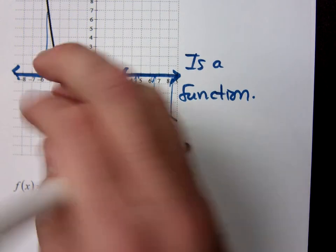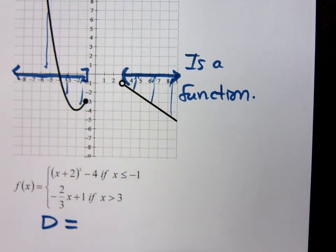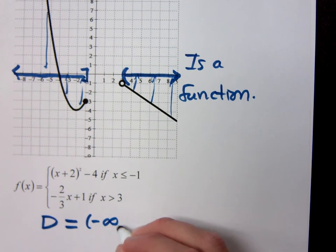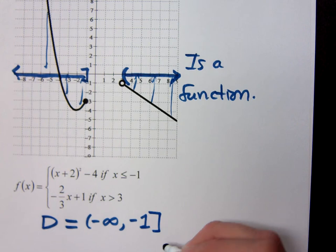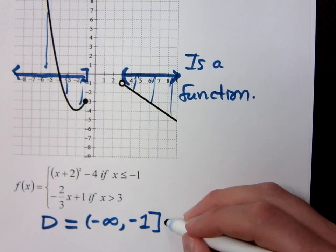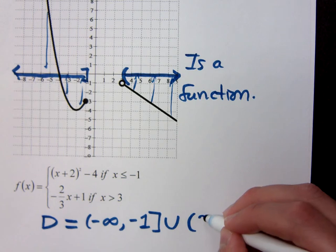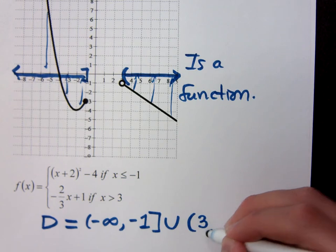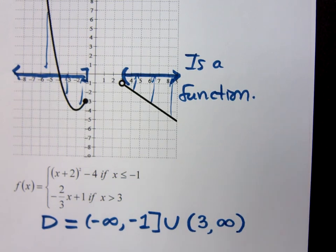You see there's this gap right here in the middle, so my domain is going from negative infinity to negative 1 — bracket. Union. And the parentheses from positive 3 to infinity.